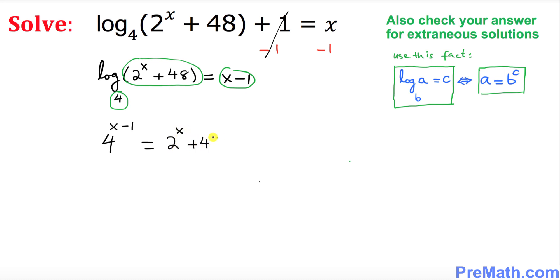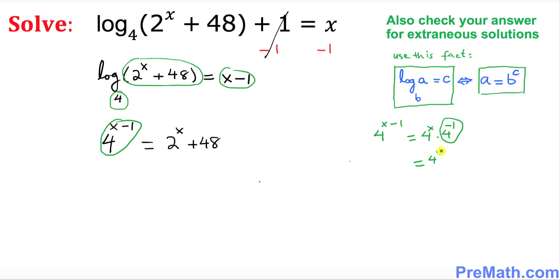Now look at the left-hand side: 4^(x−1). We can write this as 4^x times 4^(−1), using the basic rules of exponents. Since 4^(−1) equals 1 over 4, this can be written as 4^x over 4.